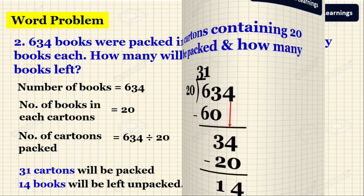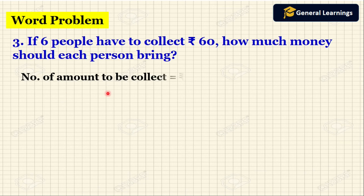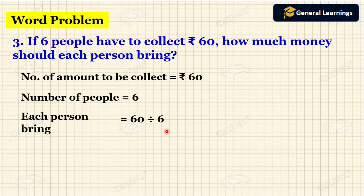Now we will see another example. If 6 people have to collect rupees 60, how much money should each person bring? We write the statement: number of amount to be collected is rupees 60, number of people is 6. We need to find how much money each person should bring. For that we divide: 60 divided by 6. We write the division. Here 60 is the dividend and 6 is the divisor.